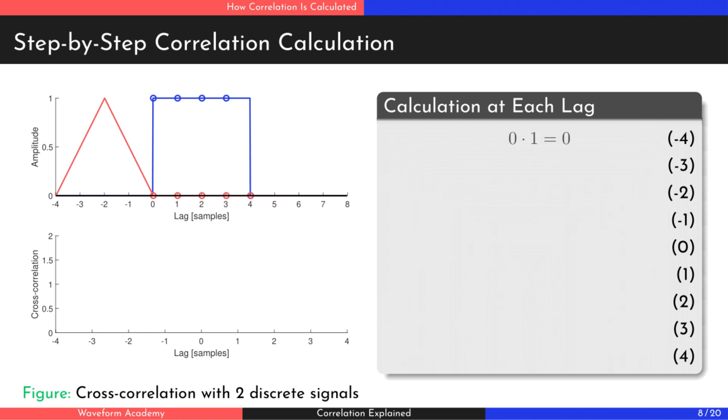To calculate the correlation, we begin by multiplying the matching values of the two signals for the current alignment. And we mark the result on the cross-correlation plot.